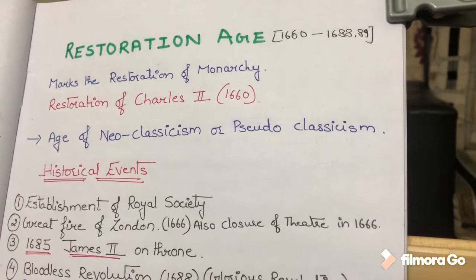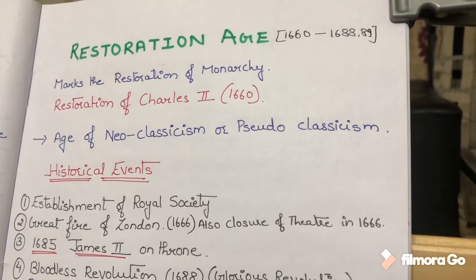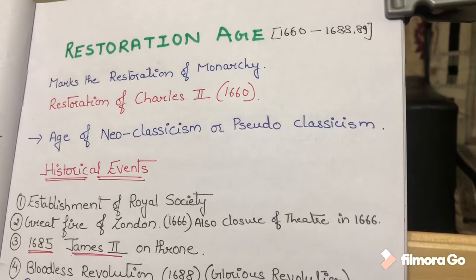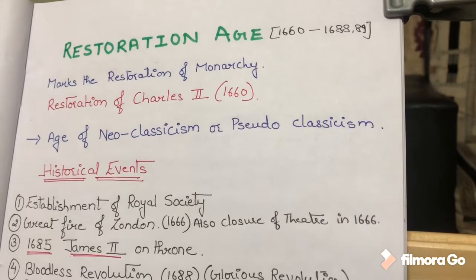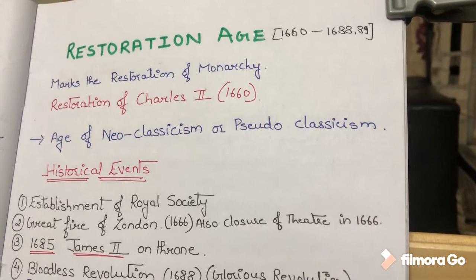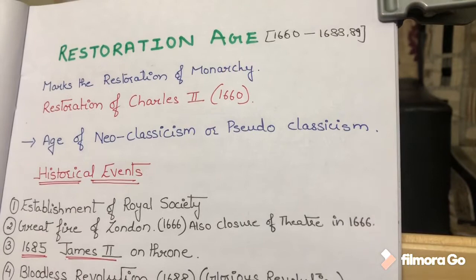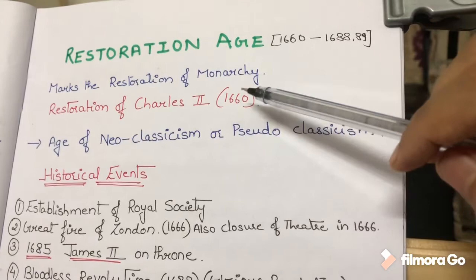Before this, during the period of interregnum, Oliver Cromwell was ruling England and he was a Puritan. They had very strict religious rules and they gave Charles I a death penalty. Because of Charles I's death penalty, his son Charles II left England. Due to strict Puritanism, the English people brought Charles II back to the throne. That is why we call it the Restoration of Charles II in 1660.